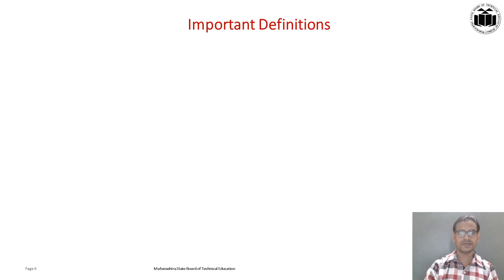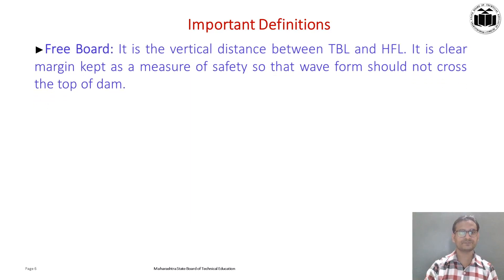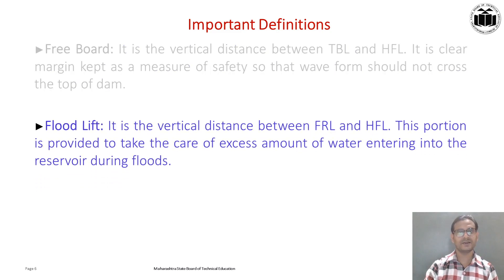Let us start with the key definitions. First is freeboard: it is the vertical margin kept between top bund level and high flood level. It is the margin kept as a measure of safety so that wave action should not cross the top of the dam. Another definition is flood depth: it is the vertical distance between full reservoir level and high flood level. This portion is provided to take care of the excess amount of water entering into the reservoir during floods.